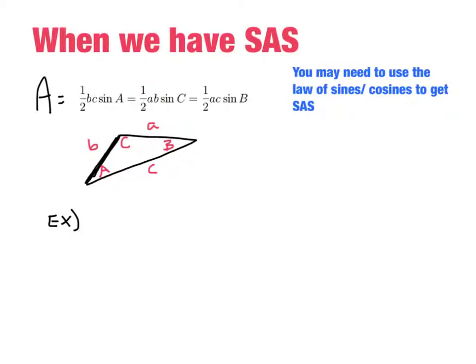Alright, when we have side-angle-side, or any time that you just don't have side-side-side, we're going to use this formula. The area is half of two sides times the sine of the angle in between. So if you look at this triangle right here, you can look at any of these formulas. Like half of AC, so A times C times sine of B, the angle in between. Okay, so that's always going to work.